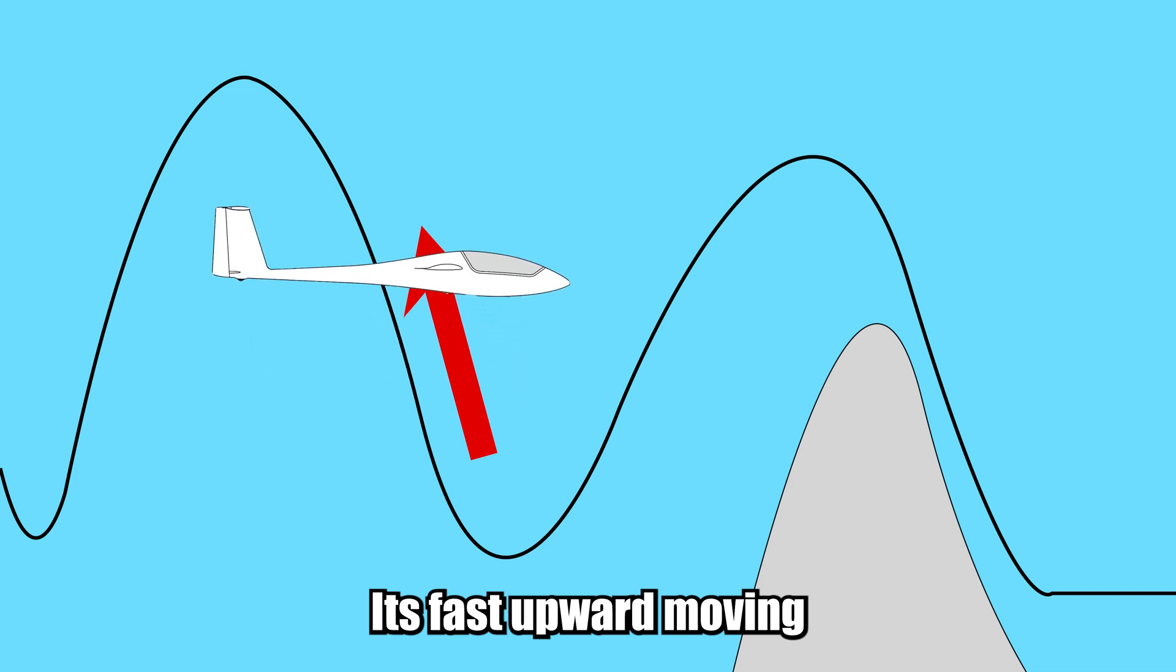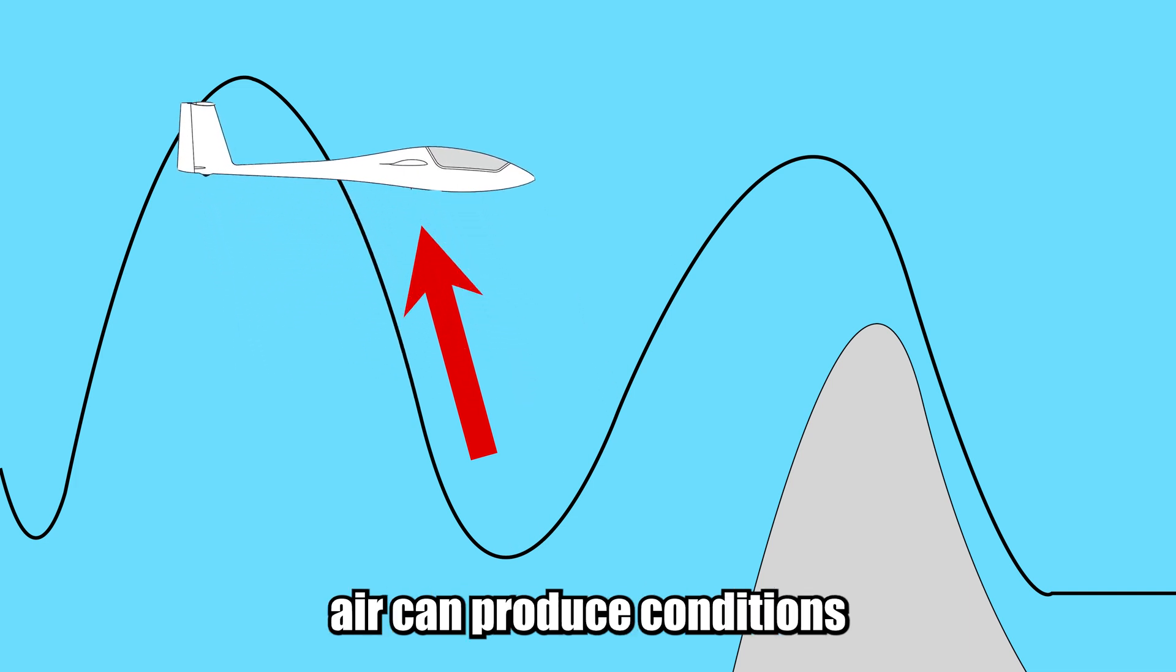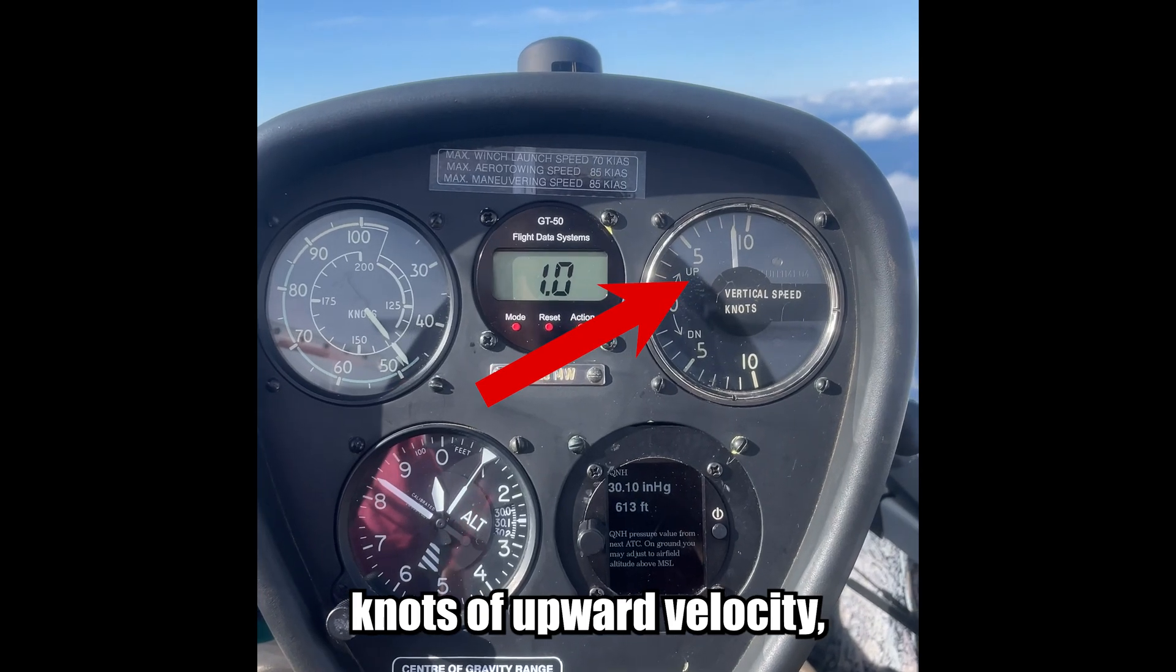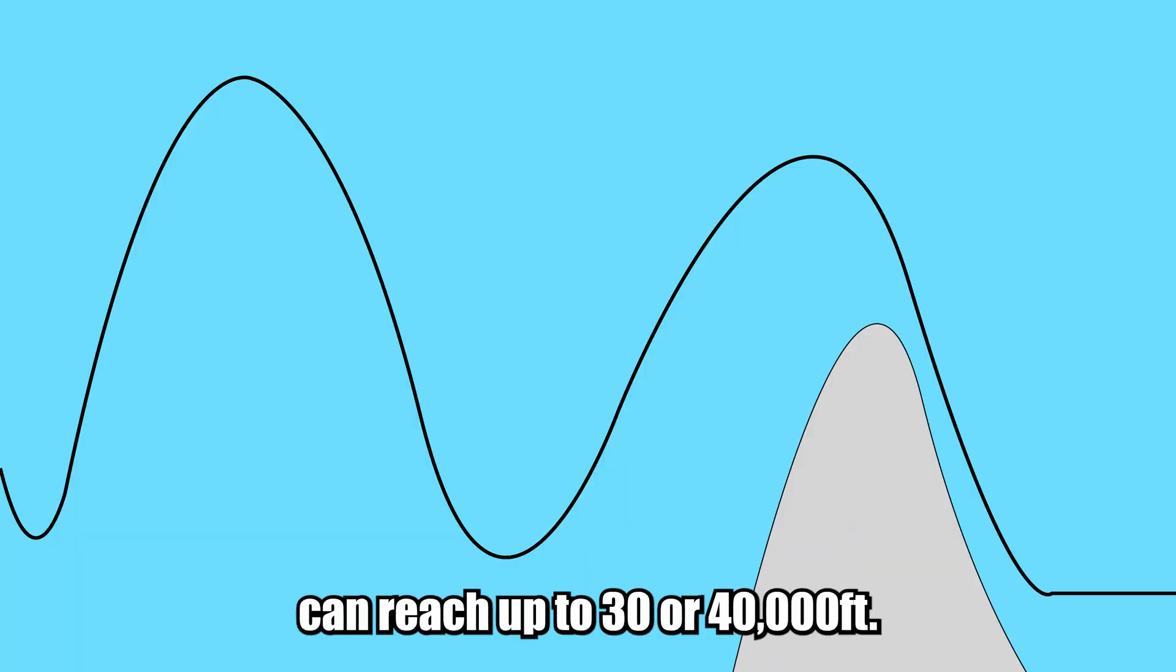Its fast, upward-moving air can produce conditions in excess of 10 knots of upward velocity, and in normal conditions can reach up to 30,000 or 40,000 feet.